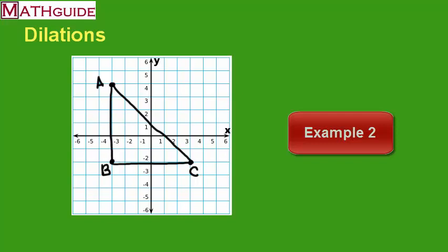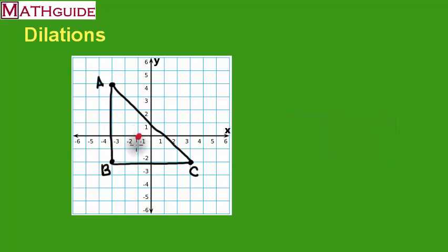For our second example, I'm going to start by putting down a different center of dilation. Let's say this is our center of dilation, which I'm marking with the letter D. I'm also going to have a different scale factor. Our first problem was a half — let's see what happens with one and a half.